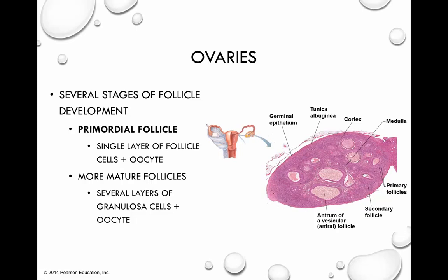There are several stages that a follicle transitions through. We start with primordial follicles — from a structural standpoint, these are just a single layer of follicle cells plus the oocyte contained within. Then, as we go through maturation, several layers of granulosa cells are added. We transition from a primary follicle to a secondary follicle, and then as we start to form a fluid-filled interior, this is what a more mature vesicular or tertiary follicle looks like.